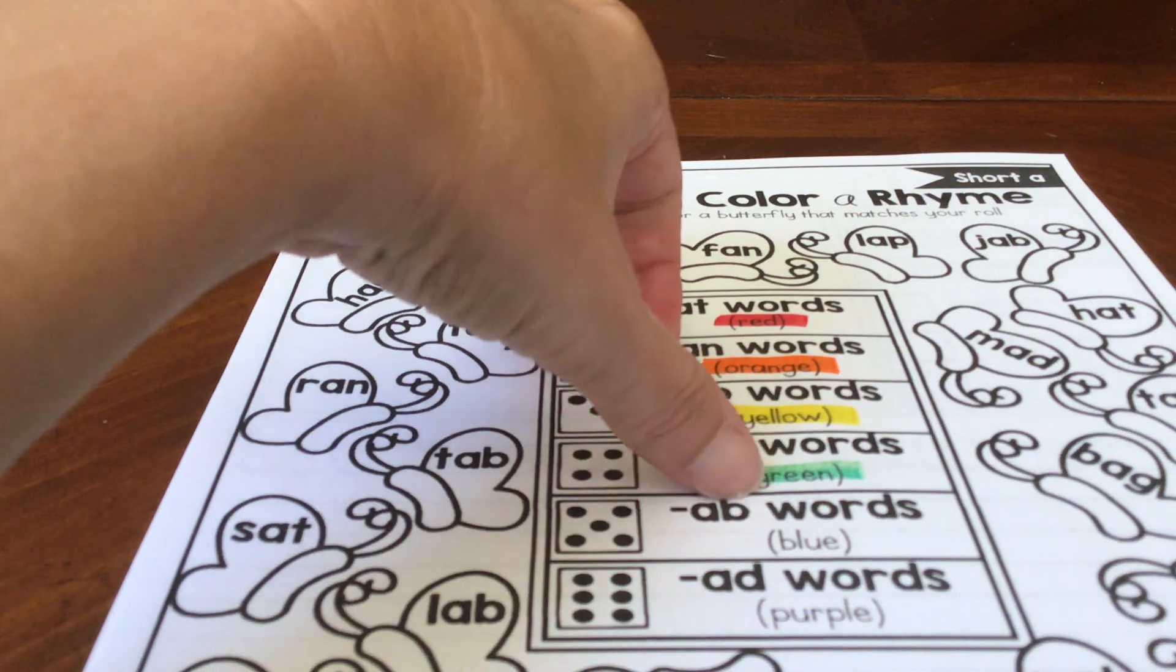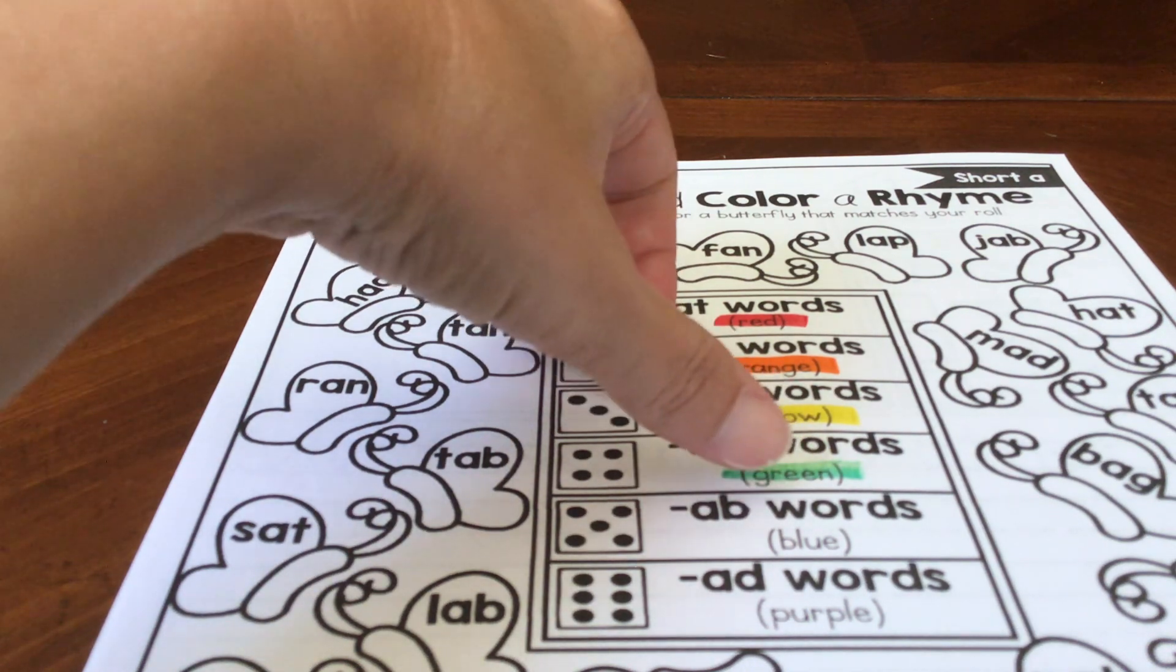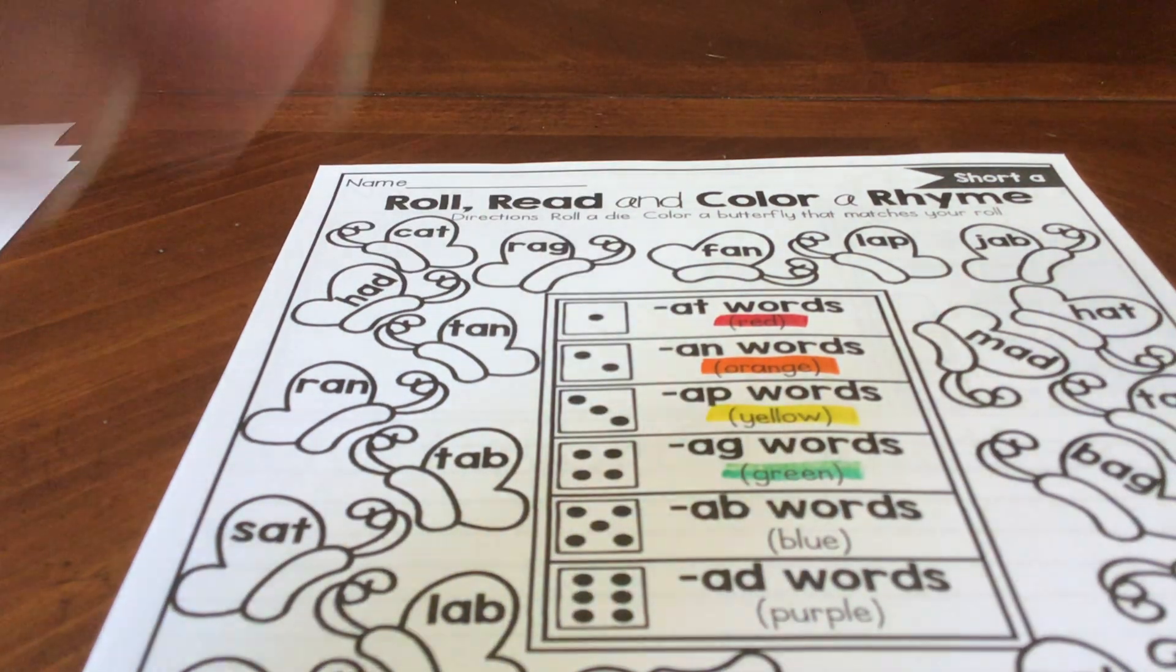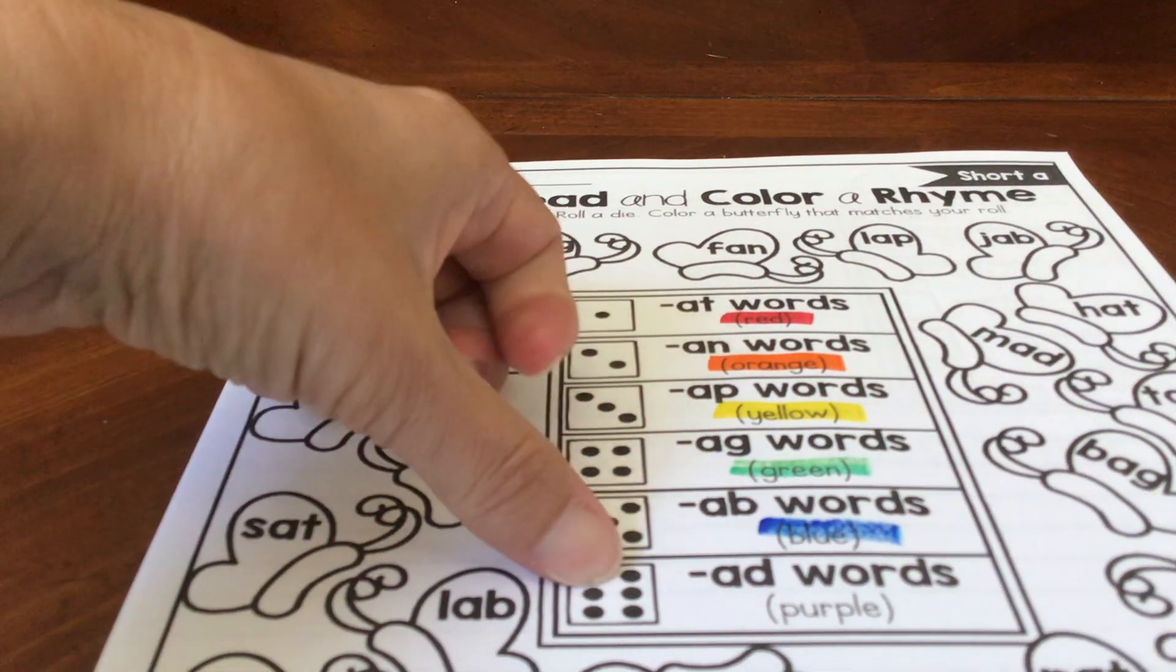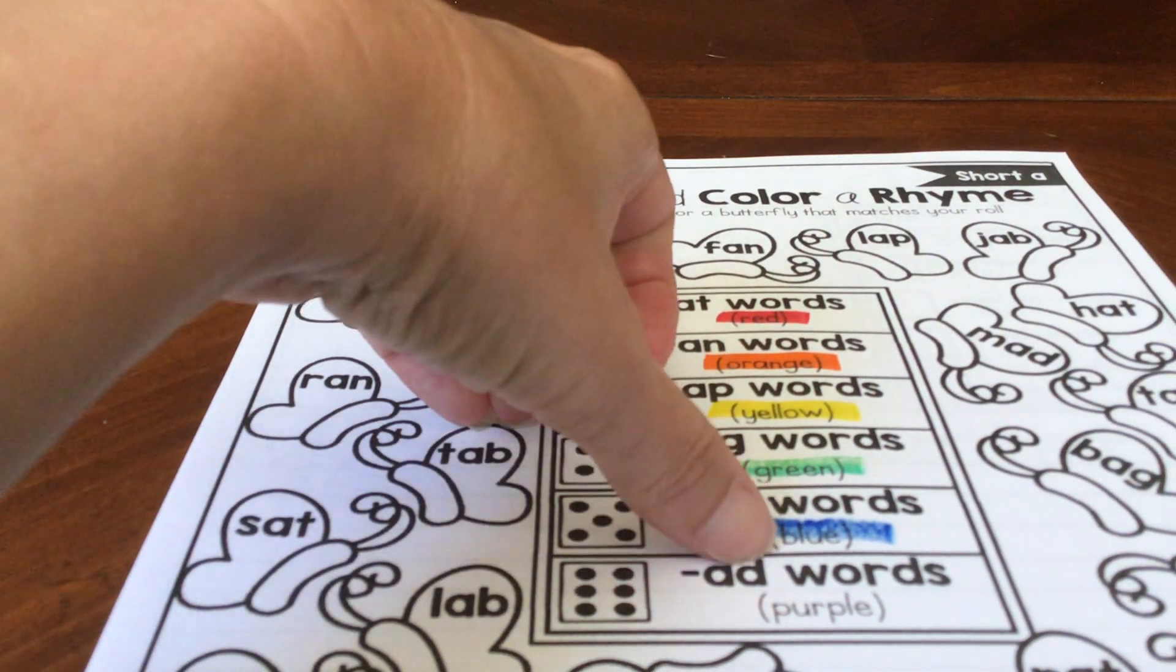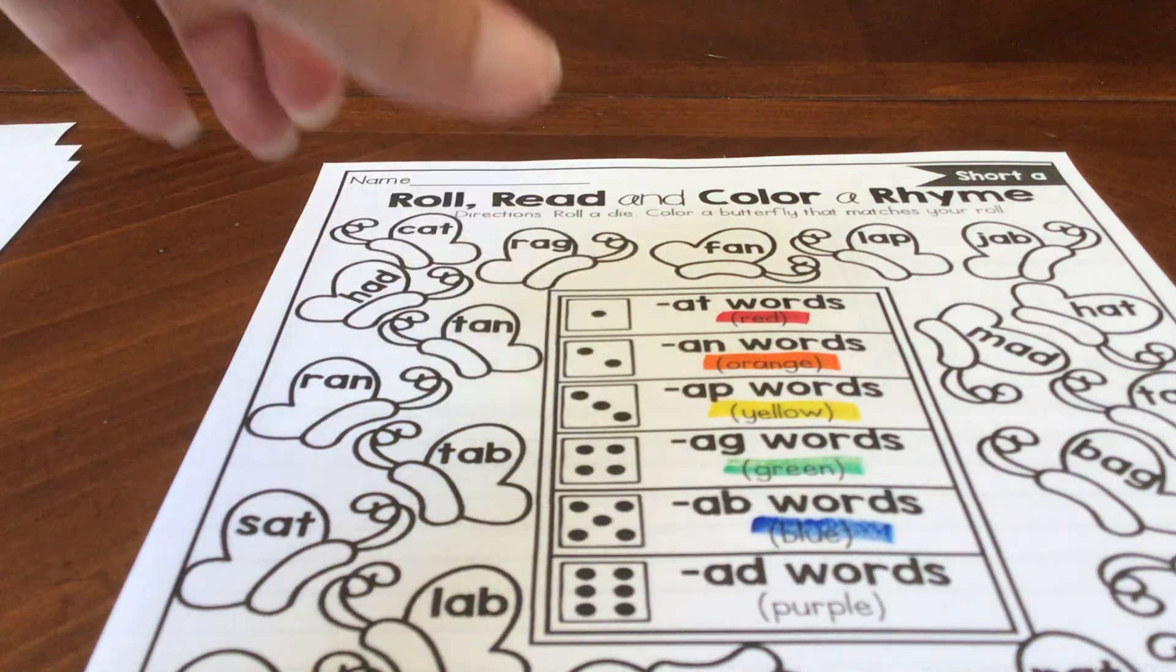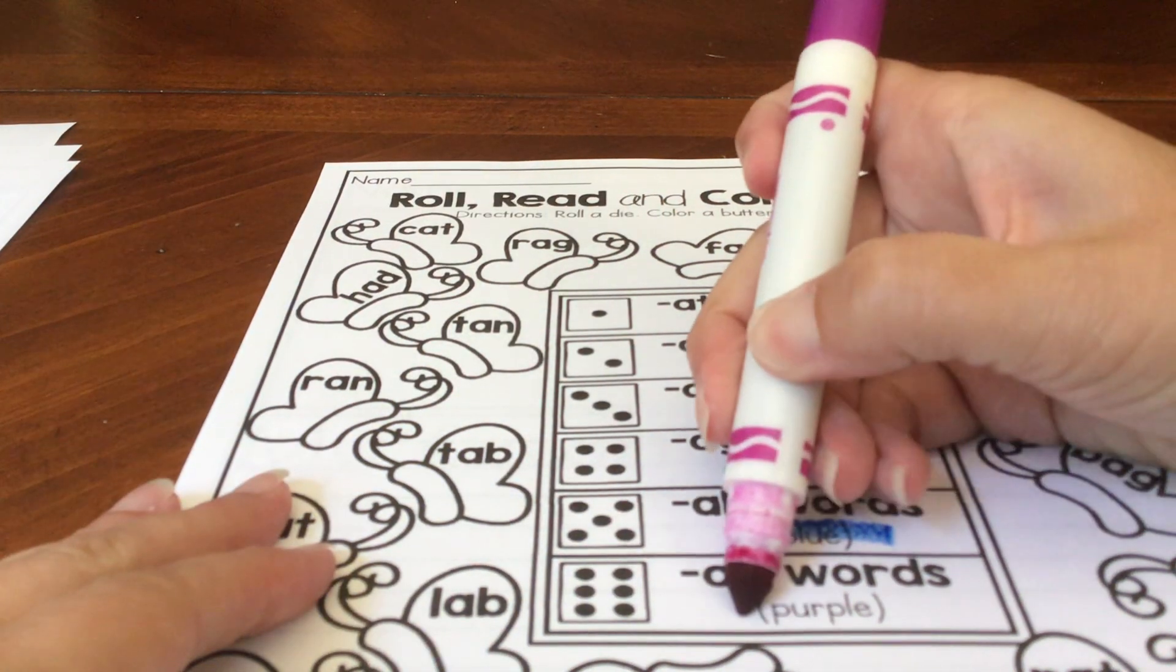If you roll a five, you're looking for ab, words that rhyme with ab. You color them blue. And if you roll a six, you're looking for ad, and you're going to color those words purple.